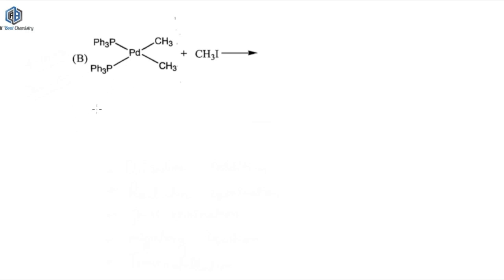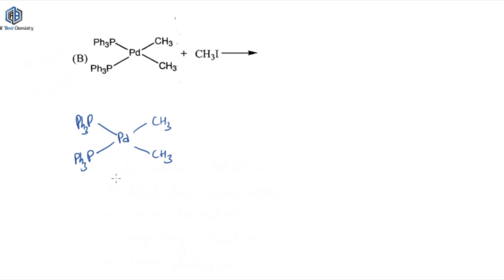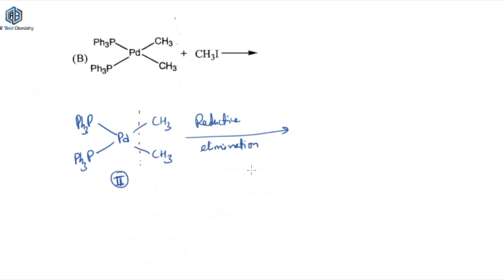So talking about the second reaction, option B. You have to treat this entity with CH3I — methyl iodide. So we have P(Ph3), then palladium, then P(Ph3), and we have CH3 and CH3. Palladium here is in +2 oxidation state. Now it can undergo reductive elimination very easily — this bond will break and your ethane group CH3–CH3 will be eliminated from this complex.